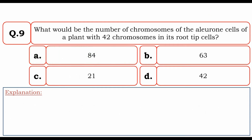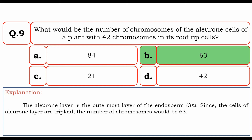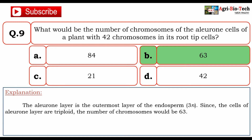Next question: what would be the number of chromosomes in the aleurone cells of a plant with 42 chromosomes in its root tip cells? The options are 84, 63, 21, and 42. The correct option is B: 63. The aleurone layer is the outermost layer of endosperm and is triploid (3n). Since the cells of the aleurone layer are triploid, the number of chromosomes would be 63.